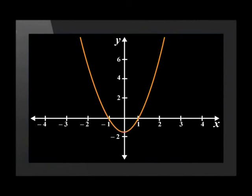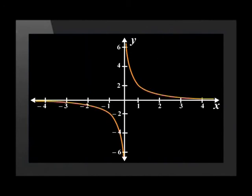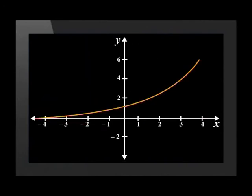Let's take a look at some of the other functions we will be covering. This is known as a parabola, or a quadratic function. Here is a hyperbola. And this is an exponential function. Did you notice that for every input value there is only one output value? This means that for every value of x, there is only one possible value for y.